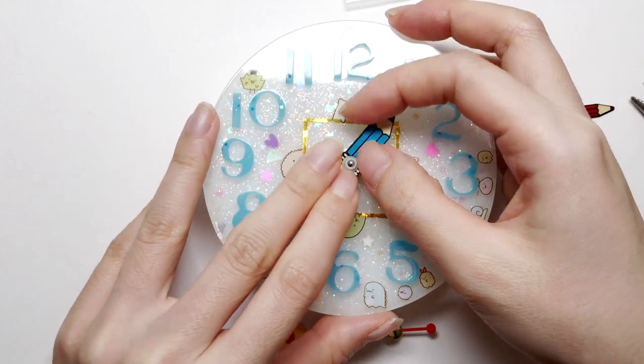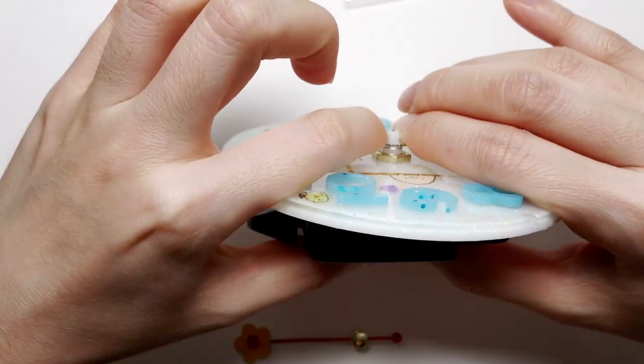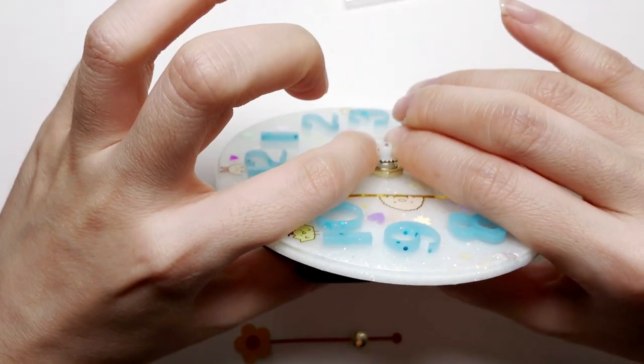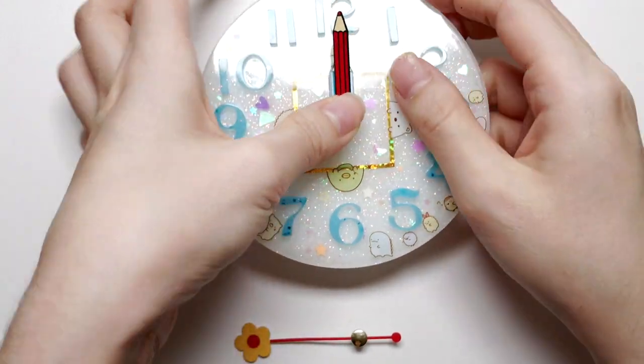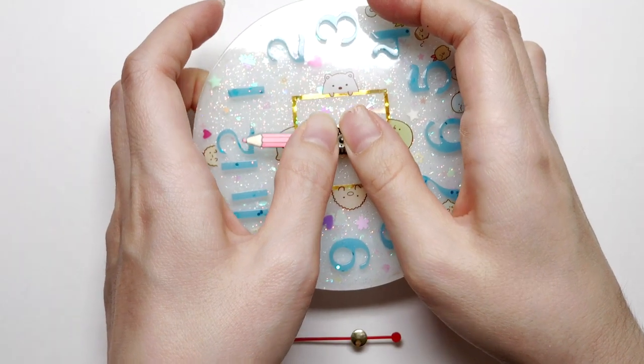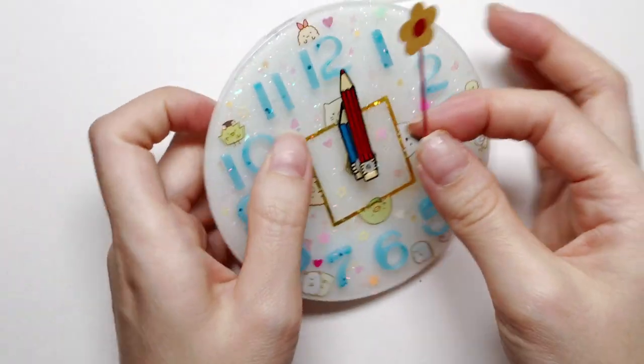Now I'm going to add the hand pieces. The hour hand goes first. Don't force it in because it might bend the hand. Kind of wiggle it in. I think that's good enough. Next is the minute hand. Carefully shimmy in the pieces and then the last piece, the seconds hand.